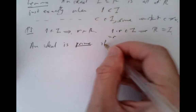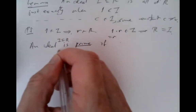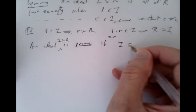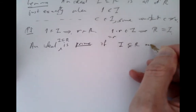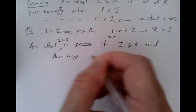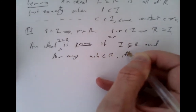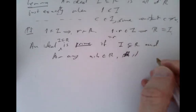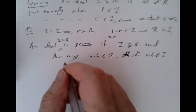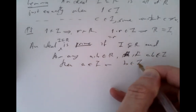An ideal I in a ring R is called prime if I is not all of R, and for any A and B in R, if the product AB is in the ideal, then A is in the ideal or B is in the ideal.